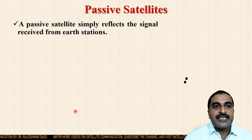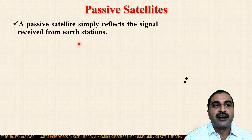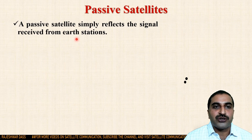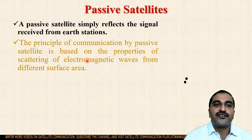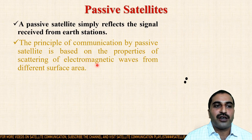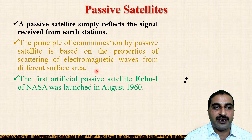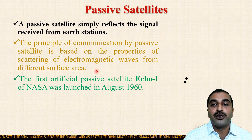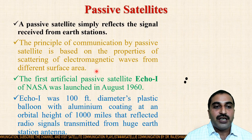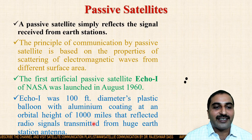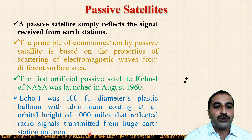The passive satellite basically simply reflects the signal received from the Earth station. The principle of communication by passive satellite is based on the properties of scattering of electromagnetic waves from different surface areas. The first artificial passive satellite was ECO-1, launched by NASA in 1960. ECO-1 was a 100-foot diameter plastic balloon with aluminum coating at an orbital height of 1000 miles, which reflected radio signals transmitted from Earth station antennas.